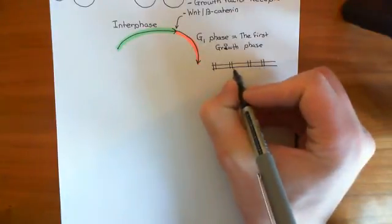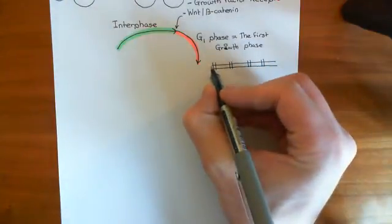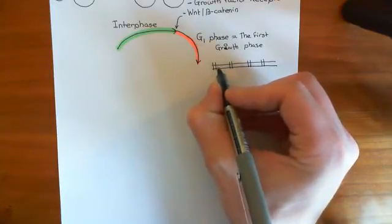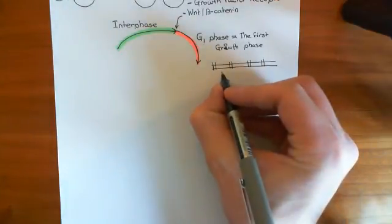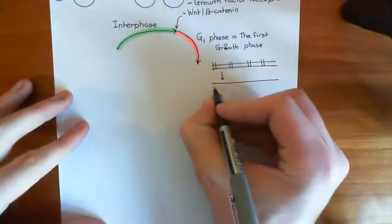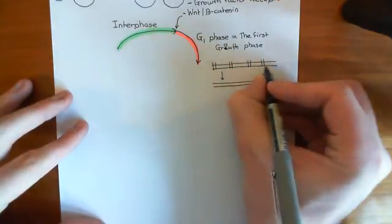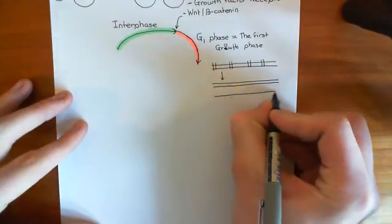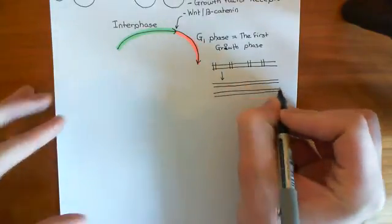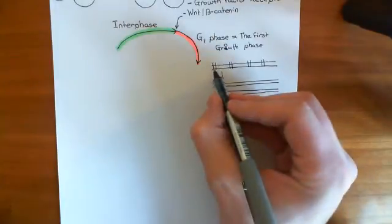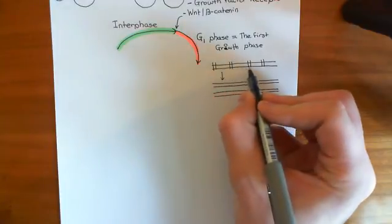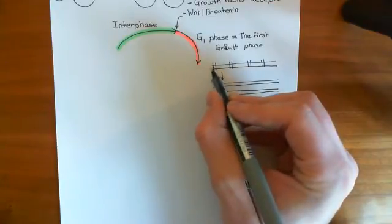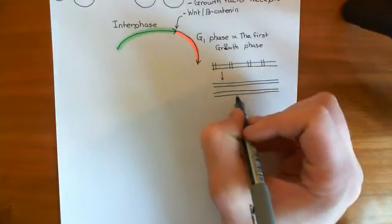If we want to replicate the DNA, we could just start the DNA polymerase off at one end and basically it could work its way down, synthesising complementary strands to both of the two strands of the DNA. The problem is that the DNA polymerase will take a very, very long time to make its way along the entire chromosome. So this process will take absolutely ages if you just set one DNA polymerase off at one end and it works its way all the way down to the other end.